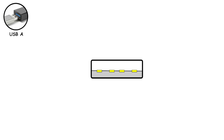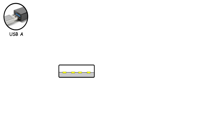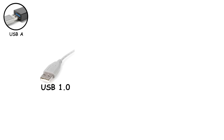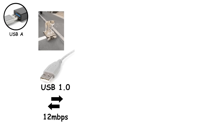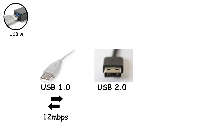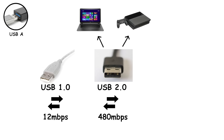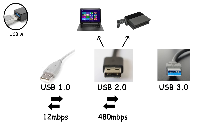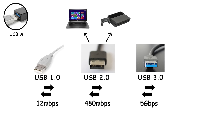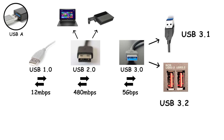While the shape stayed the same, the technology behind it kept evolving. The earliest version, USB 1.0, only transferred data at 12 megabits per second, which is extremely slow by today's standards. USB 2.0, with its typical black port, increased that to 480 megabits per second and became the most widely used in everything from laptops to game consoles. Then USB 3.0, usually marked in blue, boosted speeds to 5 gigabits per second. Later, USB 3.1 and USB 3.2 pushed that even further to 10 gigabits per second, all while keeping the same USB-A shape.